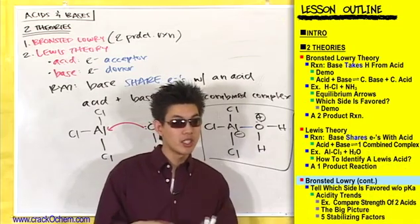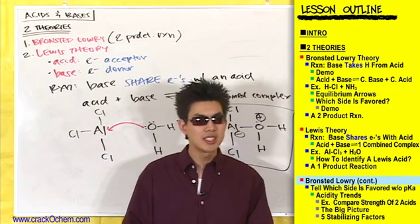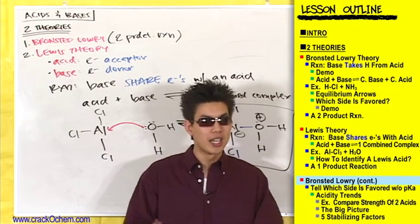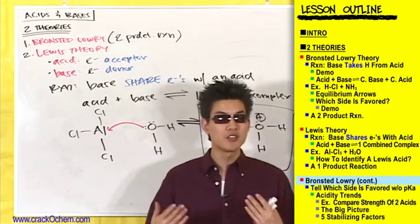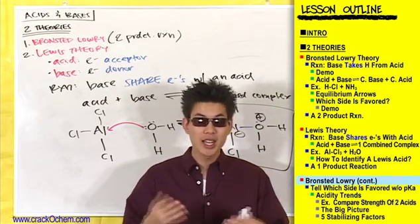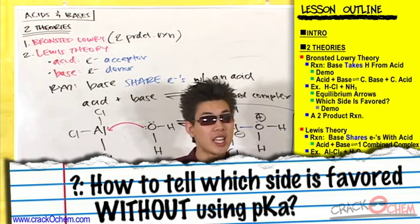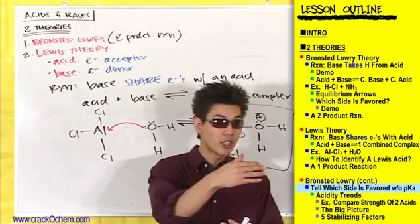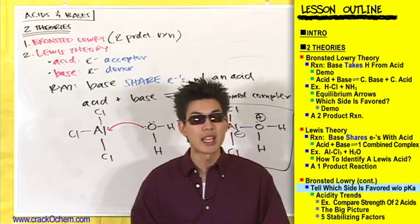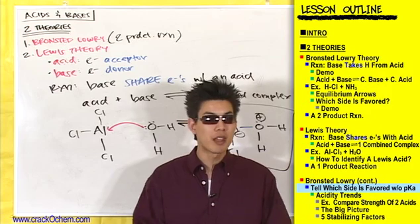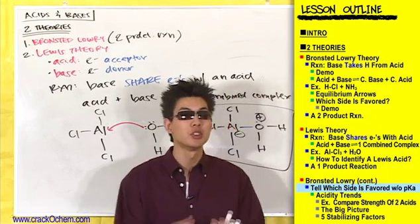We'll be dealing with Bronsted-Lowry theory, so let's go into a little more detail. There are stronger acids and weaker acids, and a reaction always favors the side with the weaker acid. But how do you tell which side has the weaker acid without looking at the pKa? How do you know which side is favored? This is the same answer for almost every question in chemistry: the reaction always favors the side that is more stable. You always go from unstable to stable.